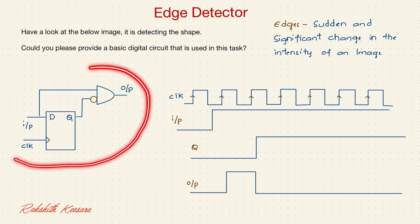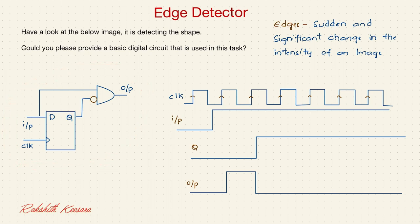Now, if you apply this input to the same circuit, what will be the output? Let's analyze once. Here it is 0. And here it is 1, right? So you will be getting a 1 here.